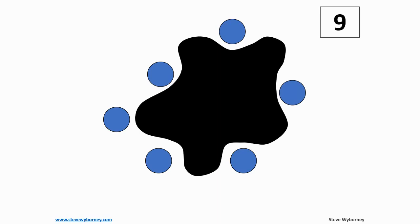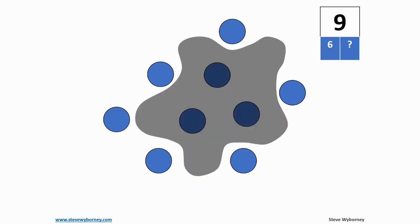Hmm. Well, I see six on the outside, and I know there were nine all together. How many do you think must be hiding? Pause if I'm moving too fast, because I know under that splat there are three dots. That makes sense to me because there are six on the outside and with three more on the inside, I have nine all together.